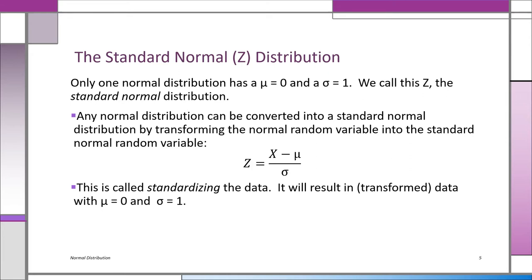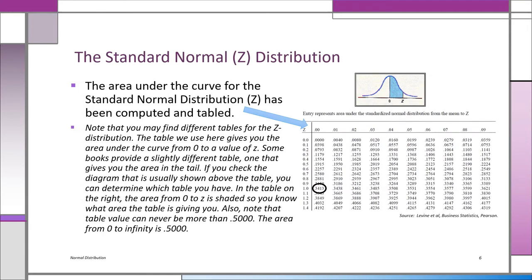Because of that property, you can transform any normal distribution — no matter what you're working with, as long as you know it's normal — into the standard normal so you can use the Z table. You do this using the formula Z equals X minus mu over sigma. That's called standardizing the data. This way, you never need to use calculus in this course; instead, you use the template, which is the Z distribution — the standard normal distribution.